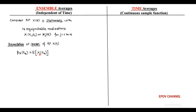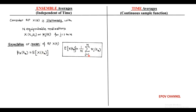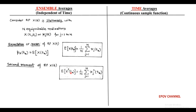The expectation E[x(t_k)] equals (1/n) summation of x_j(t_k) for j = 1 to n, where the summation of x(t_k) represents a set of n random variables. The second moment of random process x(t) is represented as E[x²(t)] and equals (1/n) summation of x²_j(t_k) for j = 1 to n.